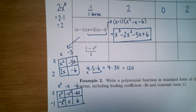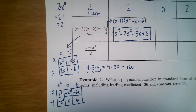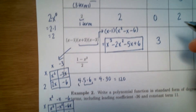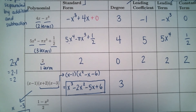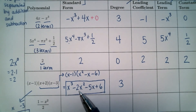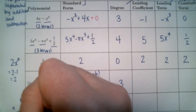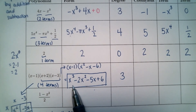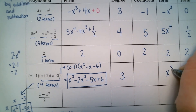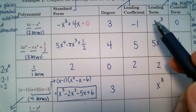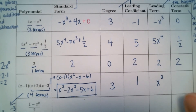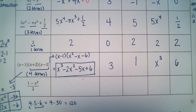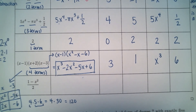So the standard form is x cubed minus 2x squared minus 5x plus 6 — now it looks like a polynomial. The degree is 3 (highest power of x is the third power). Once in standard form it has 4 terms. The leading term is x cubed, the leading coefficient is 1, and the constant term is 6. You really needed to multiply everything out before you could see the attributes of the polynomial.